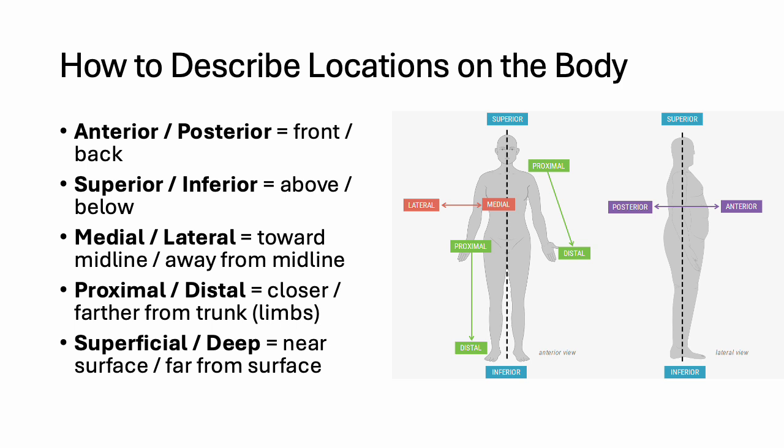Learning directional terms will help you read and write about anatomy accurately. Anterior is always the front; posterior is always the back. Superior refers to above something else; inferior refers to below. Medial means toward the midline — the middle of the body — while lateral means away from that midline. Proximal means closer to the trunk, and distal means farther away — we're usually talking about limbs with proximal and distal. Superficial means near the surface, and deep means far from the surface.